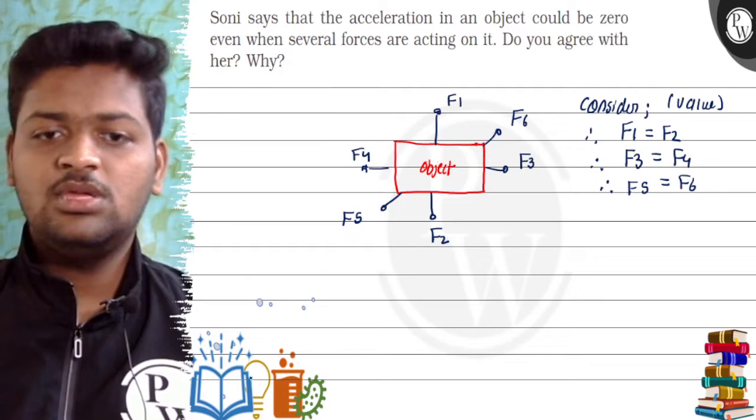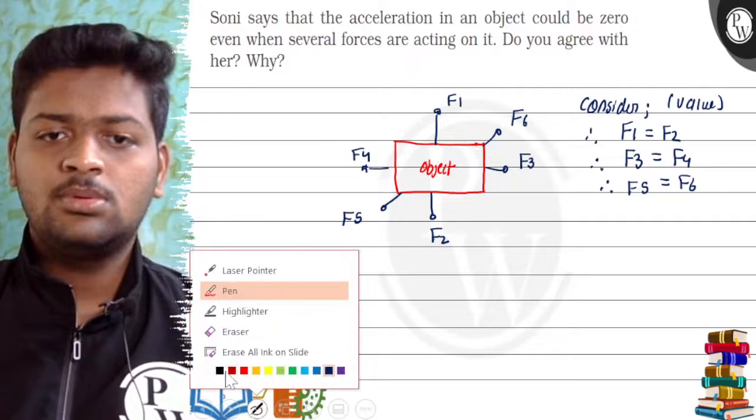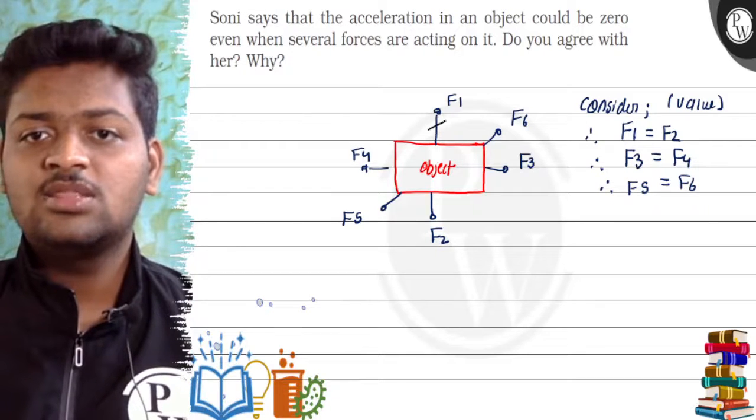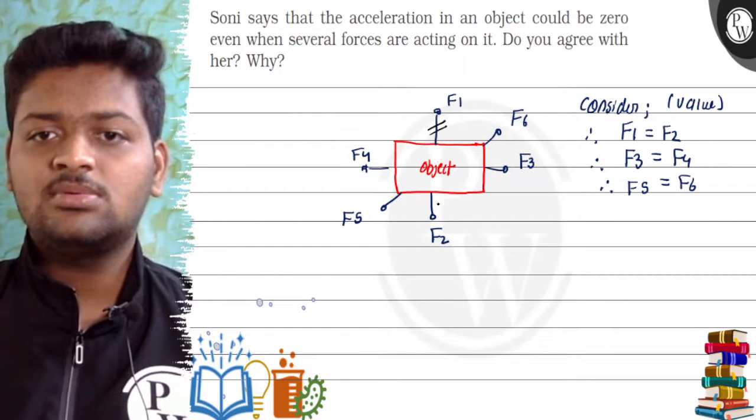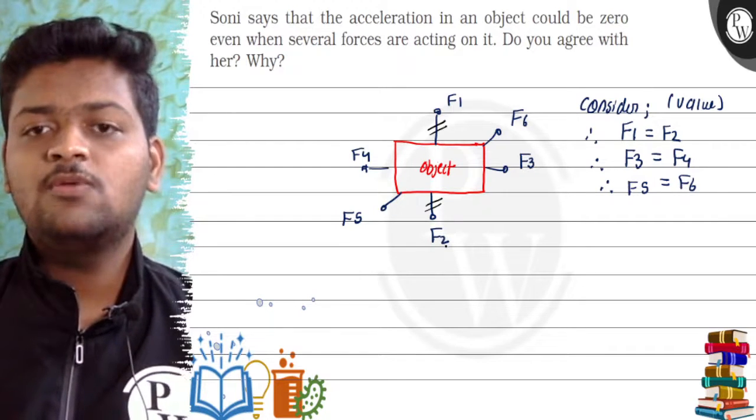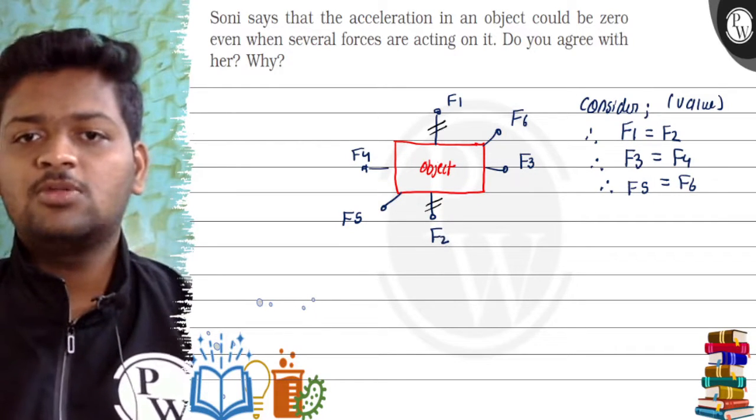Since their value is equal, these forces will cancel each other and there will be no net displacement or acceleration of the object. Since they are equal and opposite forces acting on the object.